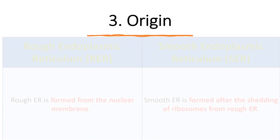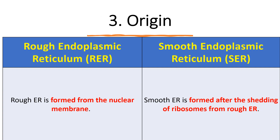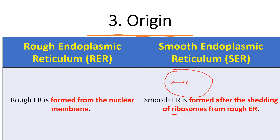The third difference is their origin. Rough endoplasmic reticulum normally forms from the nuclear membrane, which is why it exists near the nuclear membrane. Smooth endoplasmic reticulum is normally formed from the shedding of ribosomes from the rough ER — as the endoplasmic reticulum gets older, ribosomes shed from it. So initially it forms near the nucleus as rough ER, and as it ages and loses ribosomes it becomes smooth ER towards the plasma membrane.